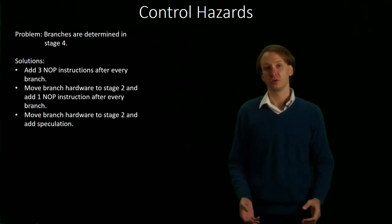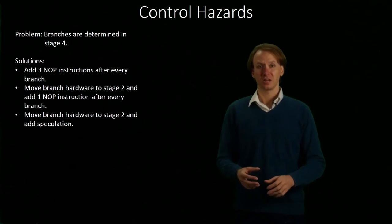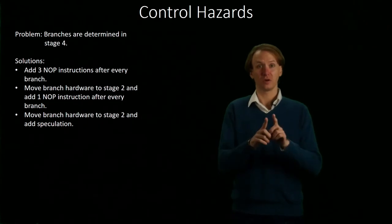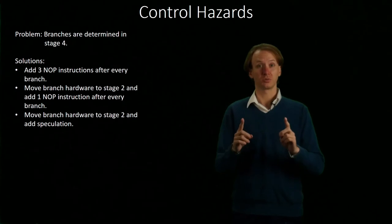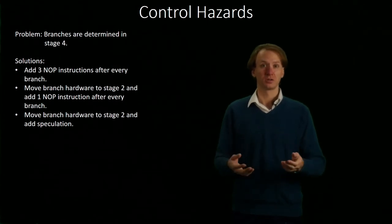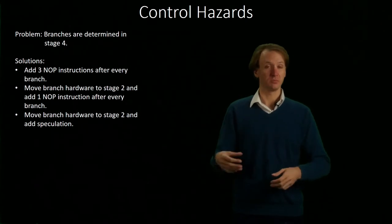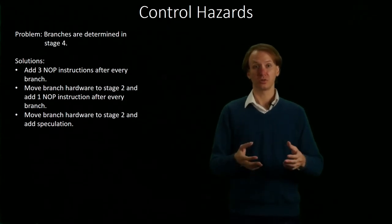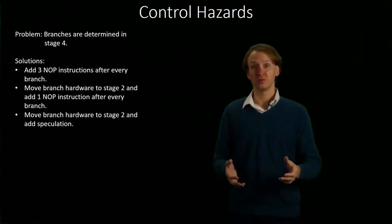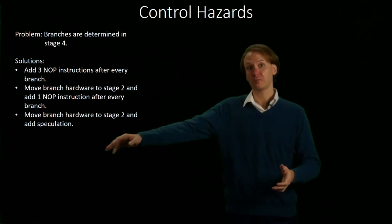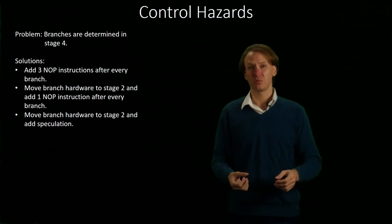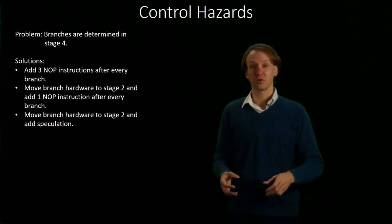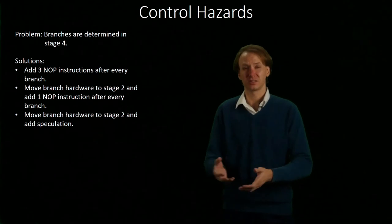One thing that we could do is move our branch hardware to stage two. It turns out comparing for equality is actually really easy. If you want to know if two bits are equal, we can take the XOR of them. If the result of the XOR is zero, then those two bits were the same; if we get a one out, then they're different. We can apply an XOR to every pair of bits in both of our registers, take the results of those, and stick them into a NOR gate. The NOR gate will then tell us whether or not those two values were actually equal. This gives us a quick and easy way to check for equality, so we can update our program counter in the second cycle. But we still need to read in a new instruction in that cycle, so we'll still have to add one NOP. Only having one NOP is way better than having three, but it's still an empty, wasted cycle.